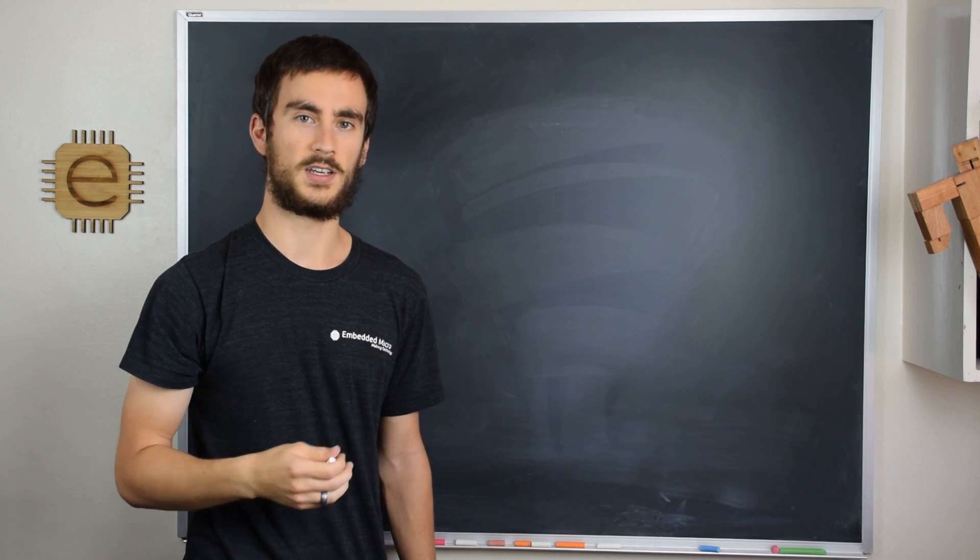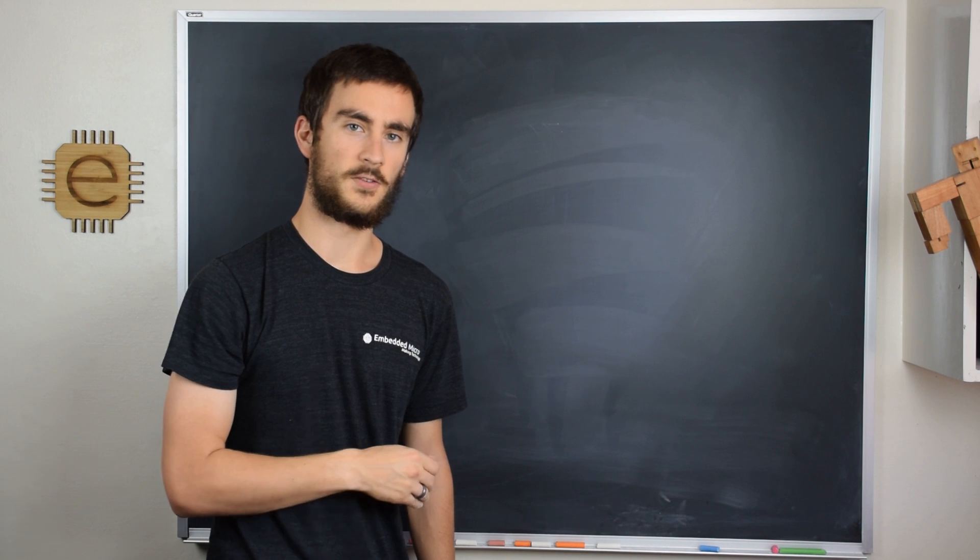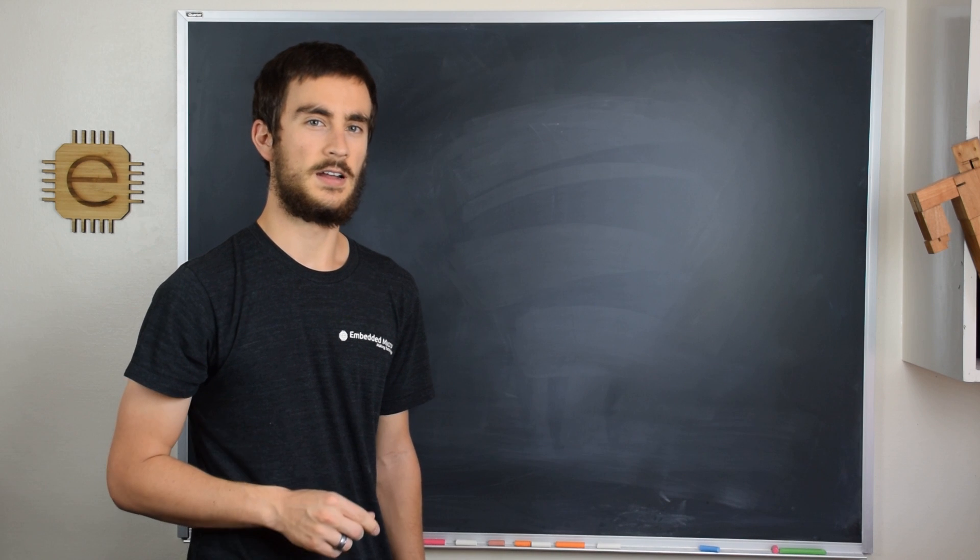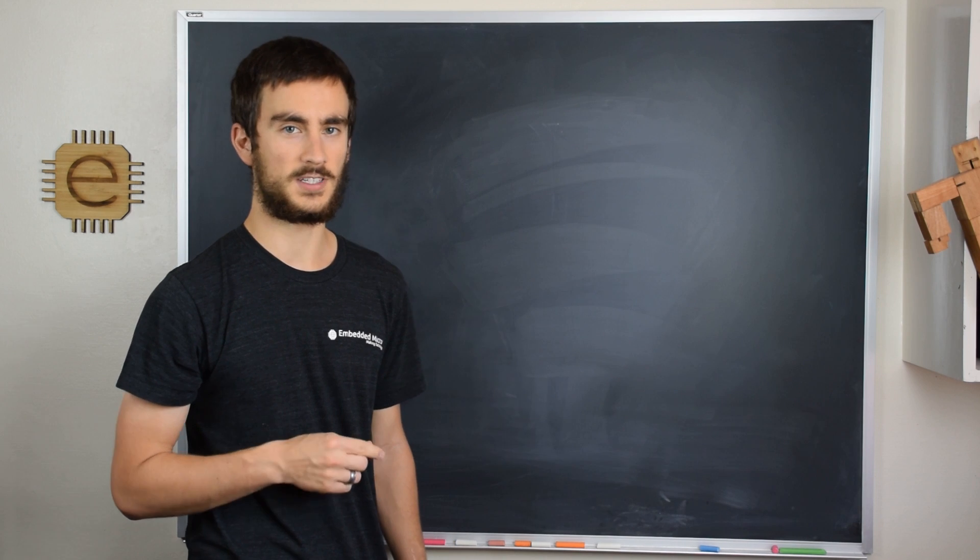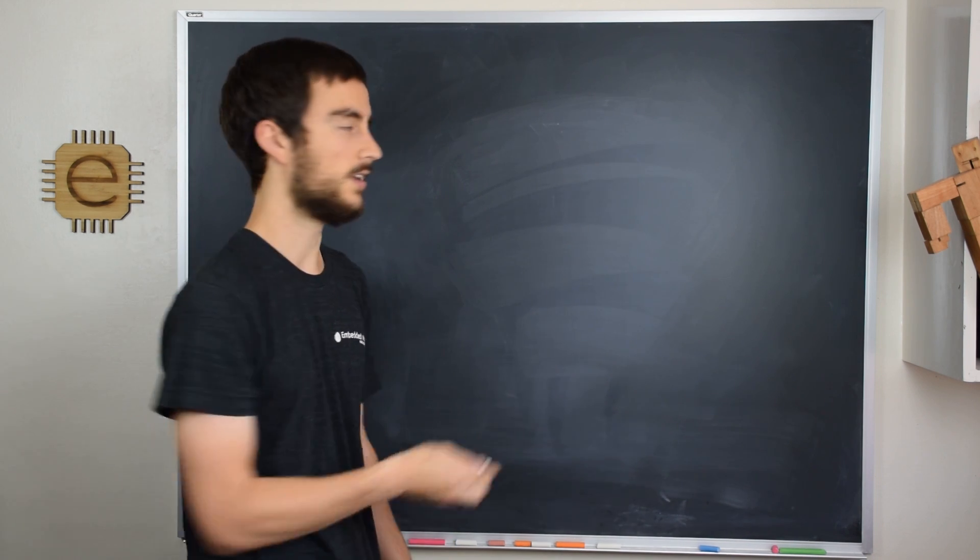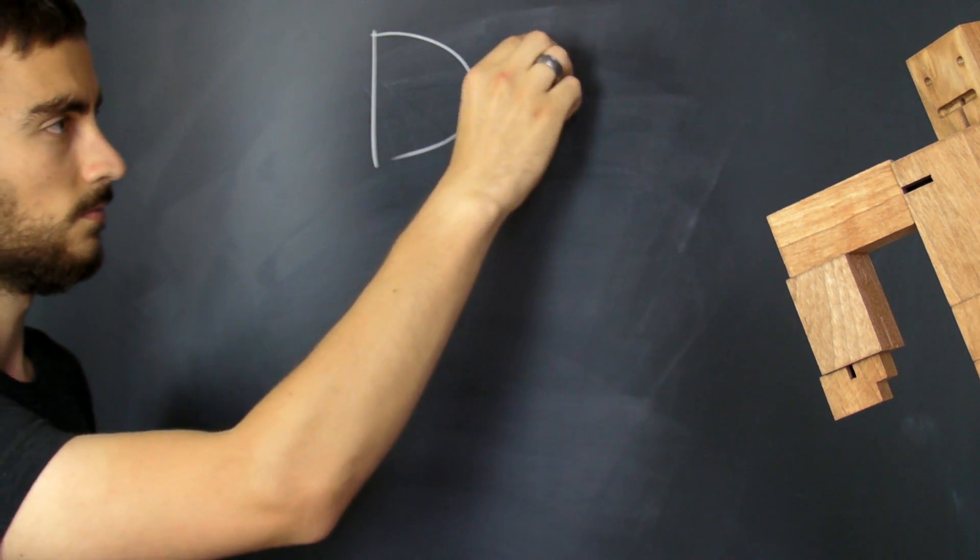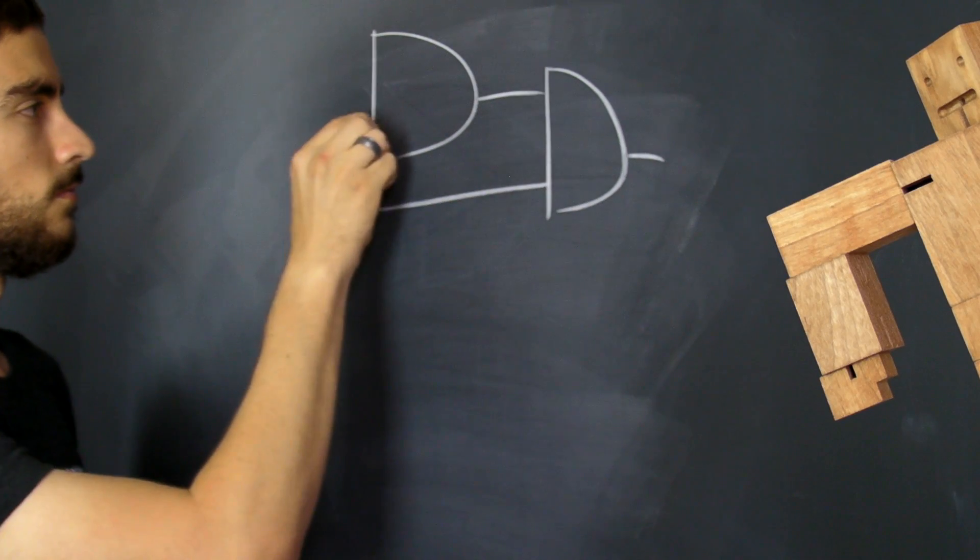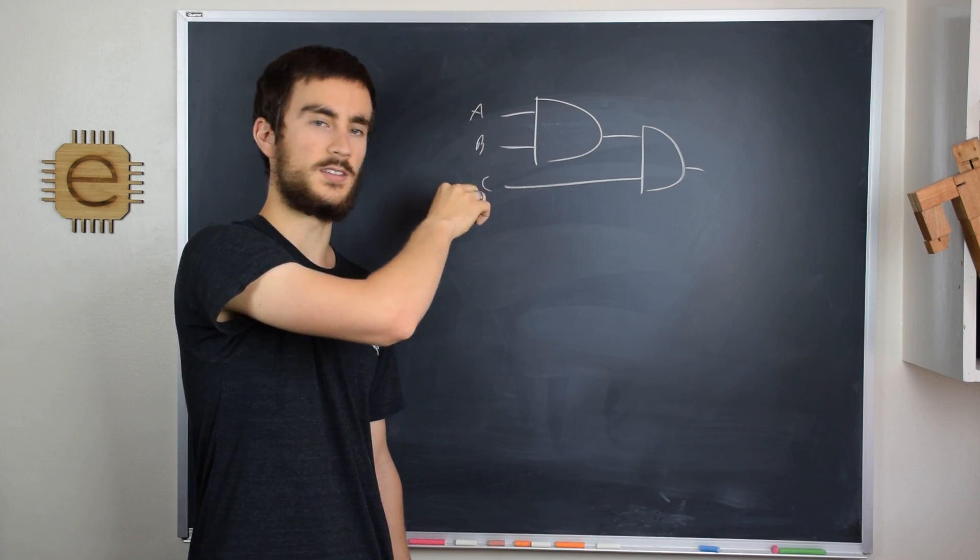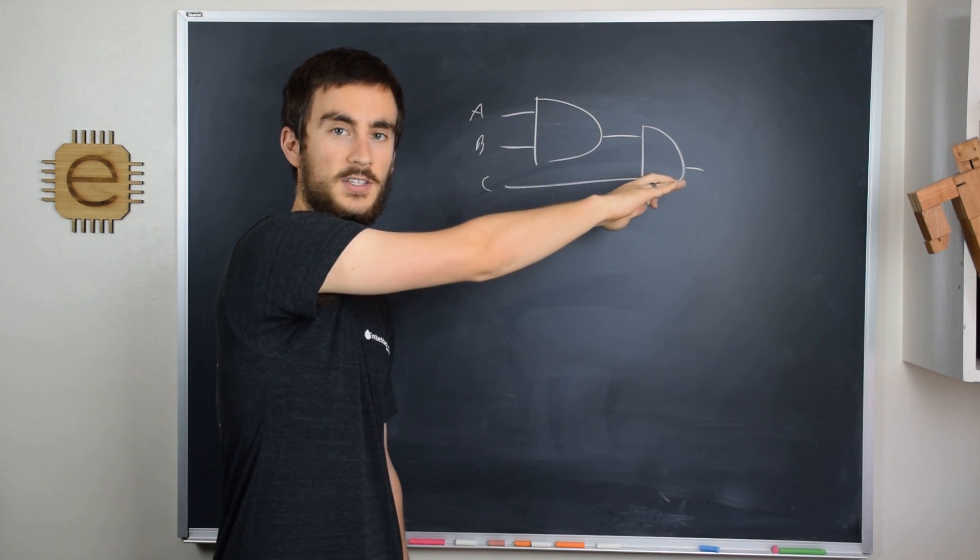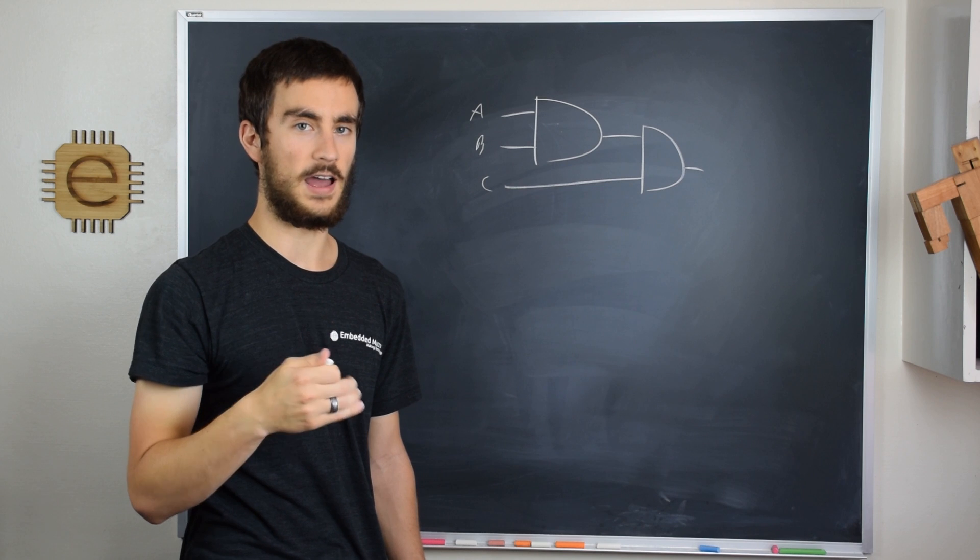Now, so far, I've only shown you the basic 2-input versions of these logic gates. However, you'll often see different versions where there's multiple inputs, say 3 or 4 inputs. Now, these are really just multiple of the 2-input versions chained together. For example, to make a 3-input AND gate, you have something that looks like this, where you have your inputs A, B, and C, and then your single output. And now, for the output to be 1, inputs A, B, and C all have to be 1.